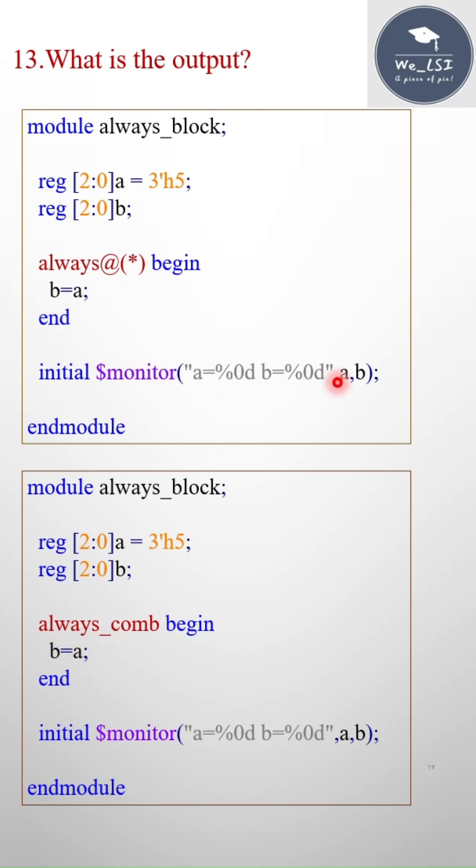So the question is, what is the value of a and b in both examples? If you see the first example, here I will get a equals to 5, b equals to x. A equals to 5 is okay because a has a 5 value initially.